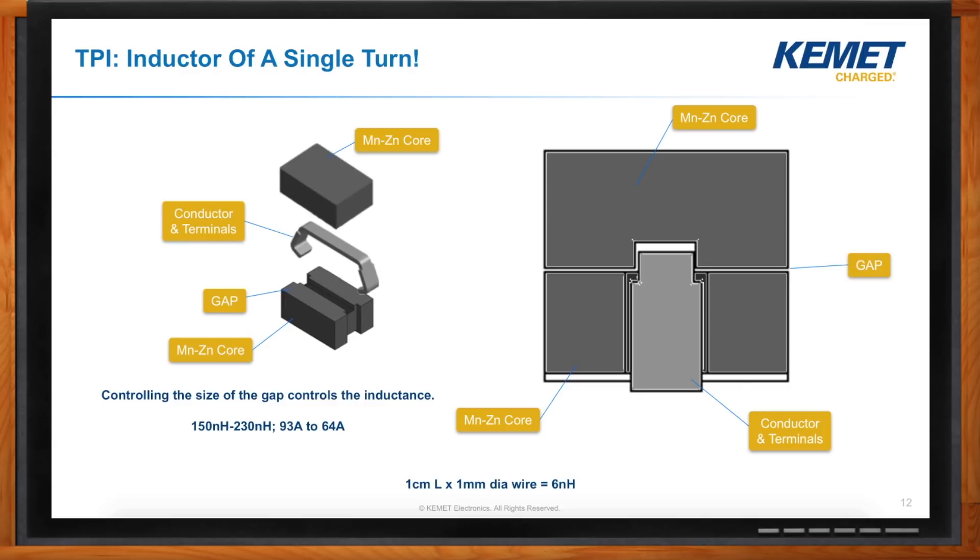Our devices range from 150 nanohenries to about 230 nanohenries. And they're capable of carrying from 64 amps up to 93 amps. And one of the ways that we control the amount of inductance of these devices is that if you look at the construction of this device, it's a conductor material sandwiched in between two pieces of core material. The amount of air gap in between those two pieces of core material will have an impact on the amount of inductance of the device. So, we can very tightly control that air gap and that gives us control over the inductance.